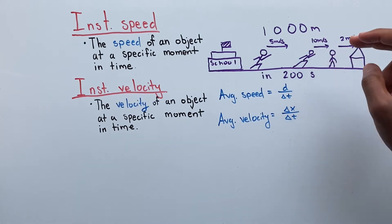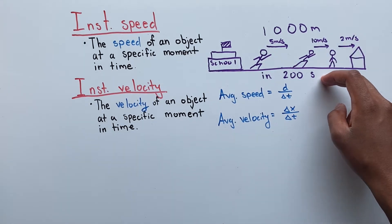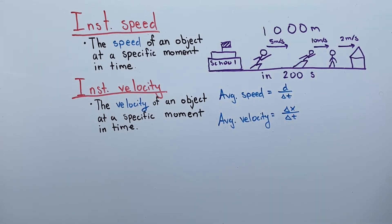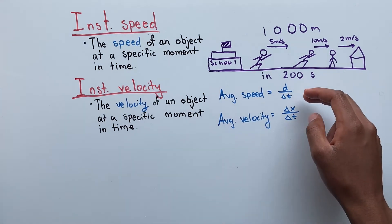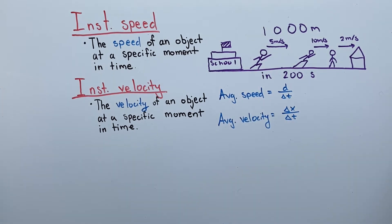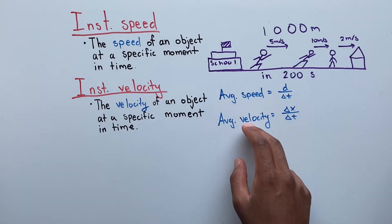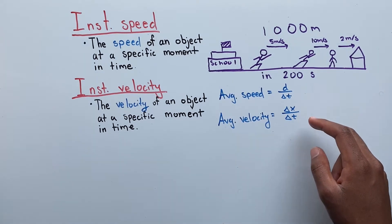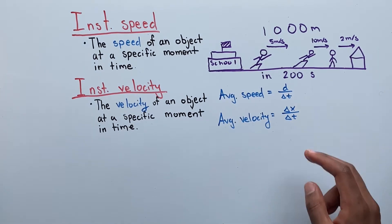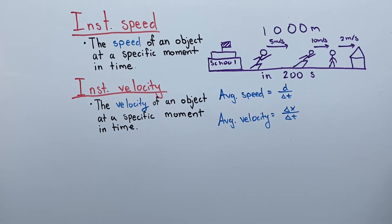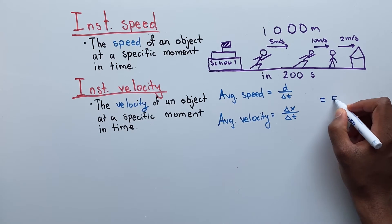Let's say you ran 1000 meters home in 200 seconds because you heard your mother was making those delicious homemade cookies you love. In the previous video, we learned how to solve for our average speed by dividing our distance with the change in time. We also learned how to solve for our average velocity by dividing our displacement with the change in time. If we solve for our average speed and our average velocity, we would get 5 meters per second.